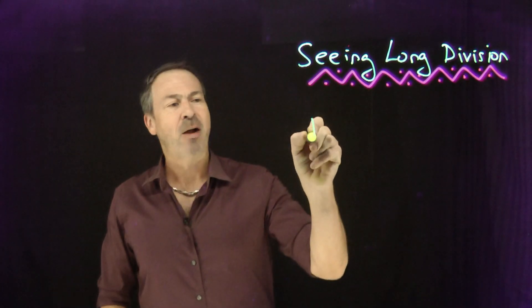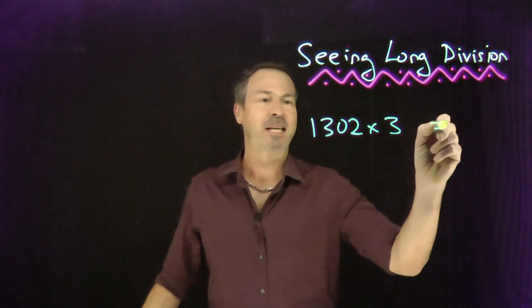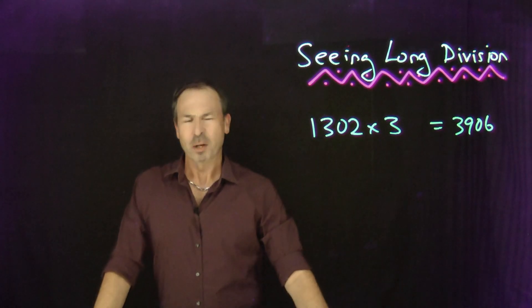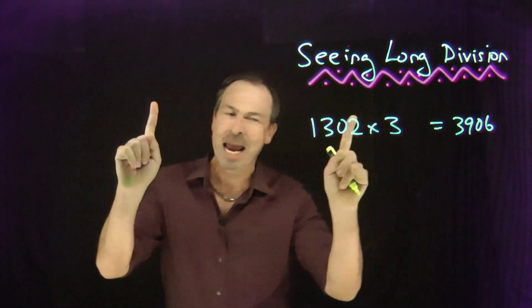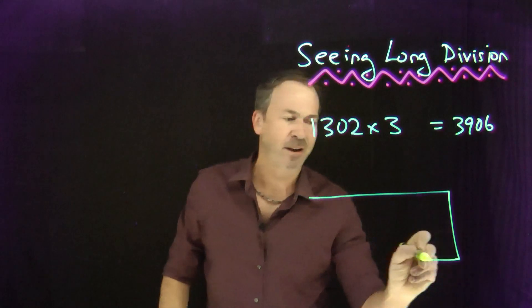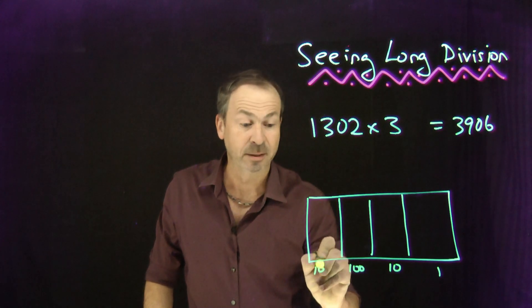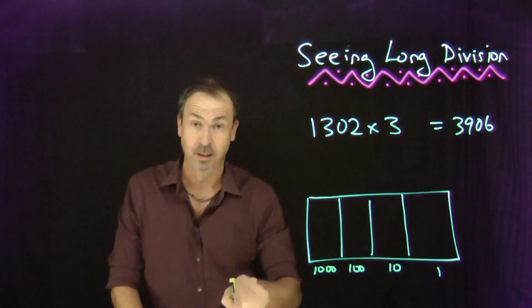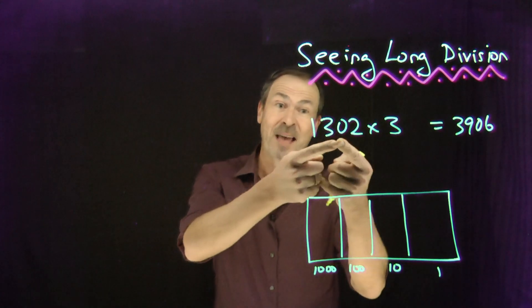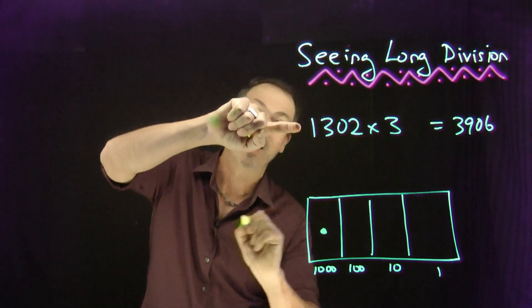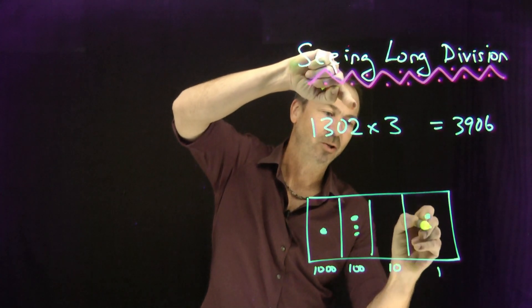Let me try 1,302 times 3. I can see the answer is going to be 3,906. But what's the picture to go with this? I'm speaking base 10, so I can represent this number in a place value chart where we have the ones, the tens, the hundreds, the thousands, ten-thousands and the rest. When I say a number like 1,302, I'm literally saying one thousand, three hundreds, no tens, and two ones.